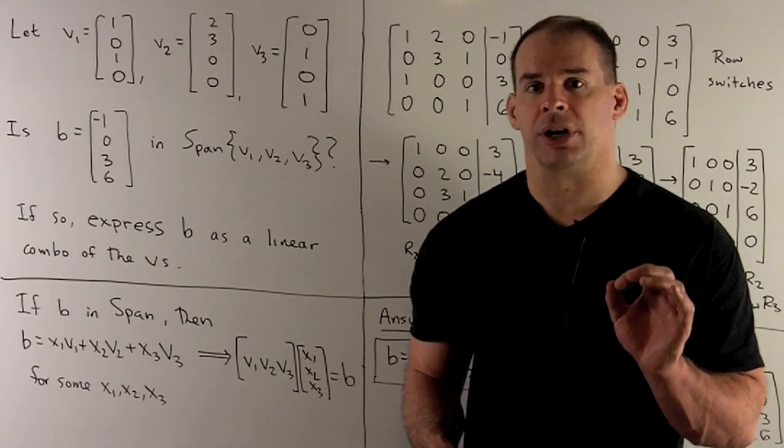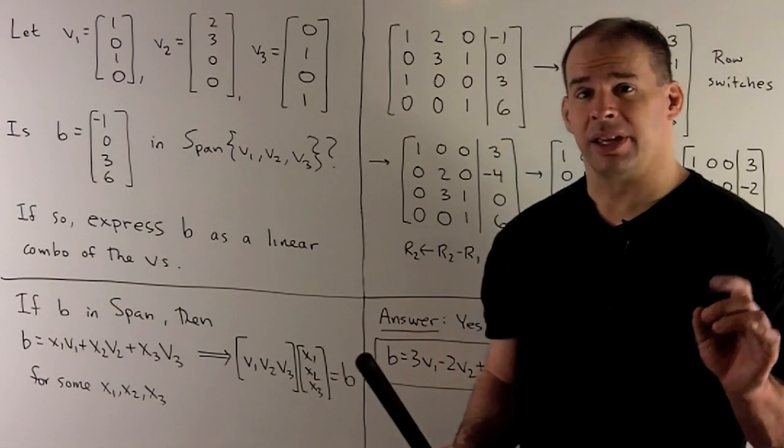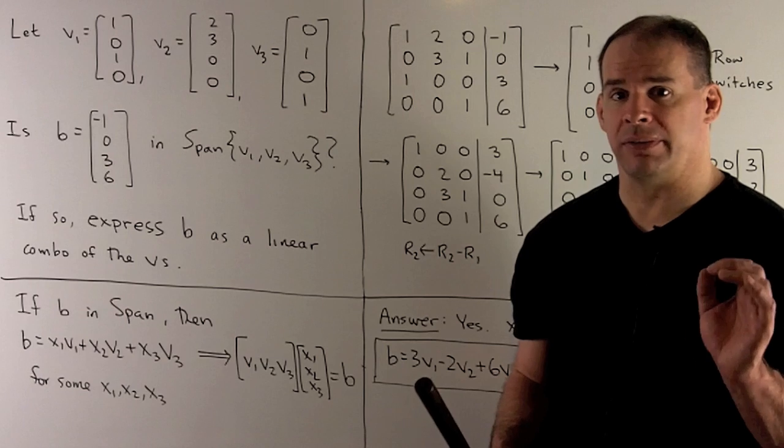I want to know, is the vector b equal to [-1, 0, 3, 6] in the span of v1, v2, and v3?